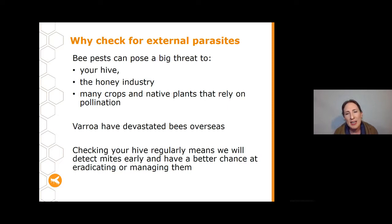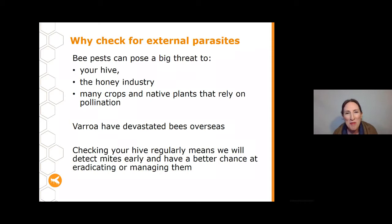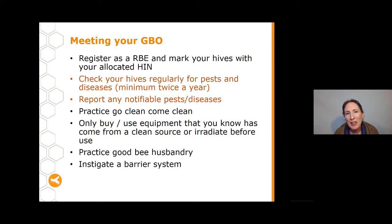Varroa in particular has had devastating effects overseas where many bee hives have collapsed, and it has had a really big impact on the honeybee industry. So if we check our hives regularly and look out for these things, we might be able to detect them early and have a better chance of eradication or management. That's why it's crucial that you as a beekeeper understand what you're looking for, how to look for it, and how to report it. It's also part of your general biosecurity obligation — making sure you've checked your hive regularly for pests and diseases and reporting any notifiable pests or diseases.